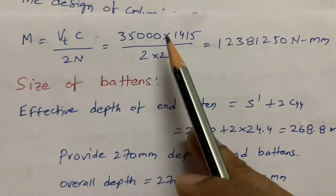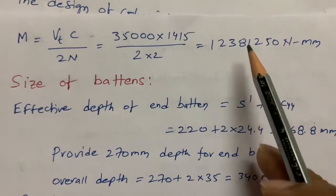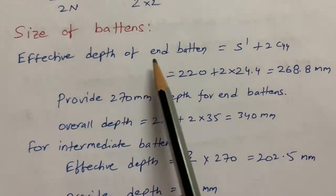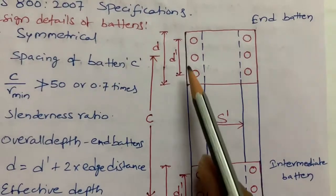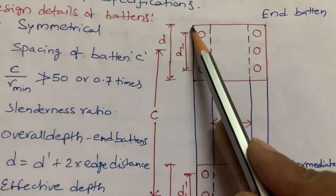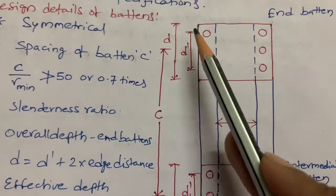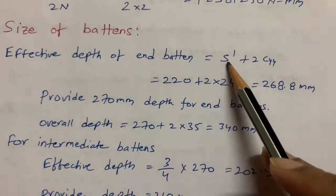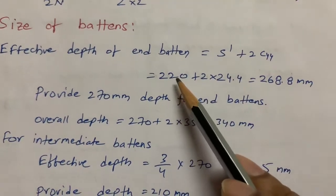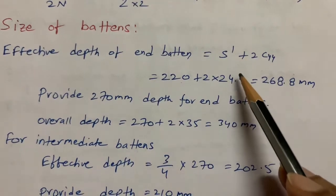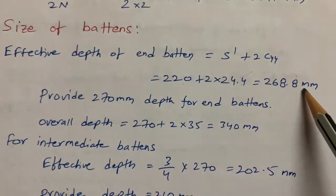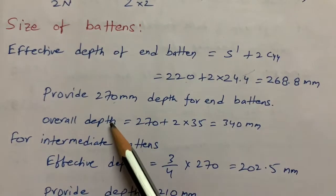For the size of the battens, I first find the effective depth of the end batten. The formula is: effective depth = spacing between channels + 2 × C_yy, where C_yy = 24.4 mm (from steel tables for the ISMC section). So effective depth = 220 + 2 × 24.4 = 268.8 mm, and I provide 270 mm. The overall depth = effective depth + 2 × gauge distance = 270 + 2×35 = 340 mm.